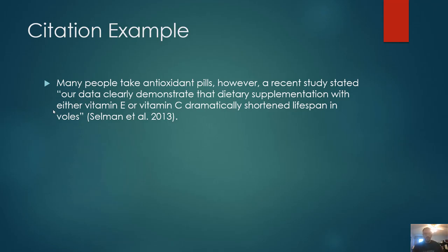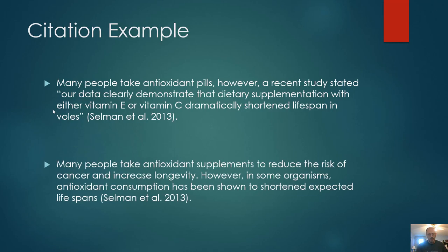Here's an example of citations. There's a paper on vitamins and how they affected the lifespans of voles — kind of like a mouse. Here's one wrong way someone might cite it: 'Many people take antioxidant pills. However, a recent study stated, quote, our data clearly demonstrate the dietary supplementation...' We never actually do that — we never quote directly from a source. That's kind of like plagiarism. Unless you're quoting something Darwin said to make a point, you never quote from a scientific paper. The better way is to take the information from that quote, turn it into your own words, and then cite the paper where you got that information. That's how we do things in biology.